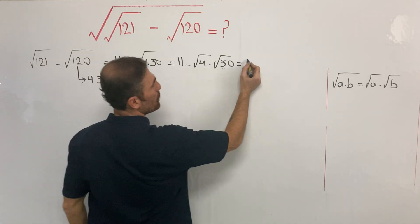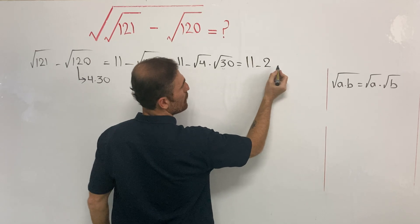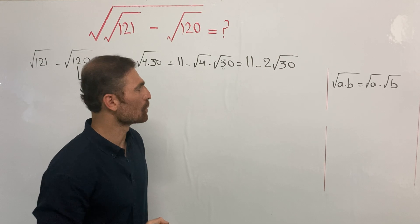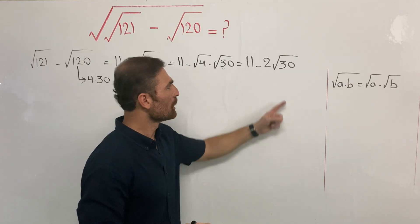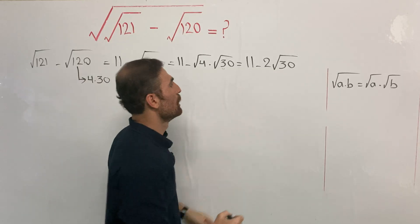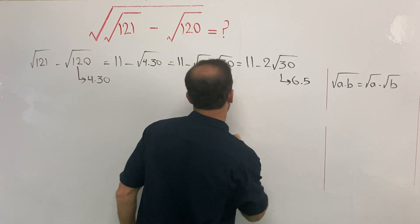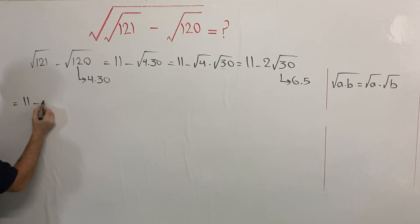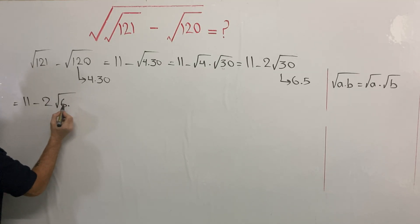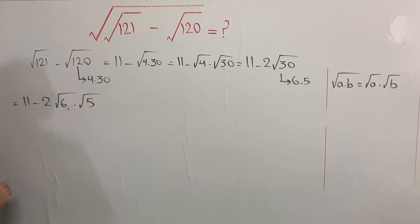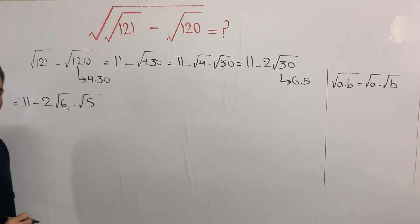Second root of 4 is 2, so let me write it: 11 minus 2 times second root of 30. What can we do to continue the solution? 30 can be written as a product of two numbers: 6 and 5. So it is going to be 11 minus 2 times second root of 6 times second root of 5.